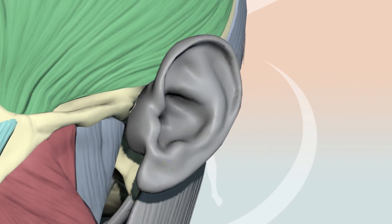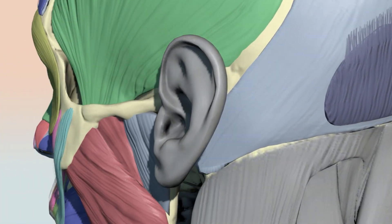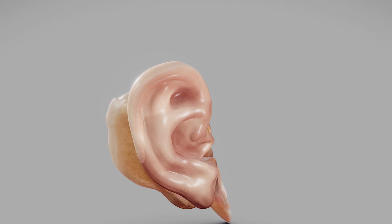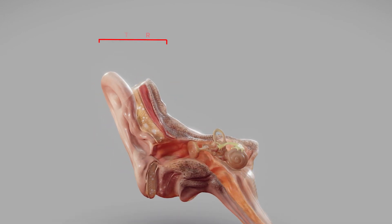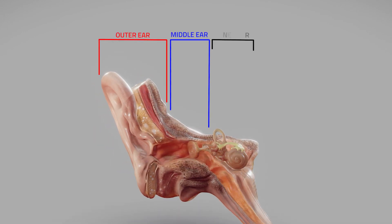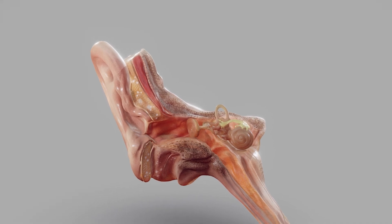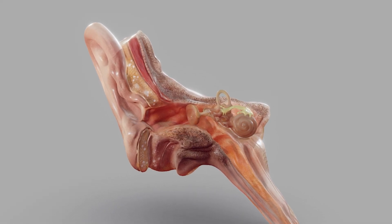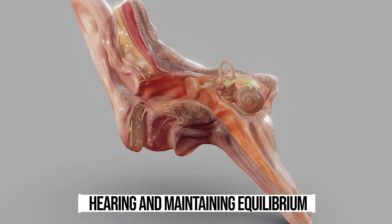The human ear is a complex organ responsible for hearing and balance. It is divided into three main sections: the outer ear, the middle ear, and the inner ear. Each part plays a crucial role in the process of hearing and maintaining equilibrium.